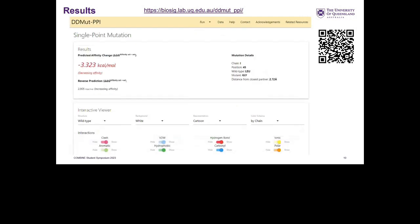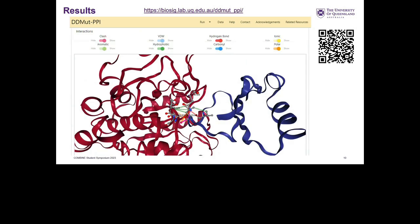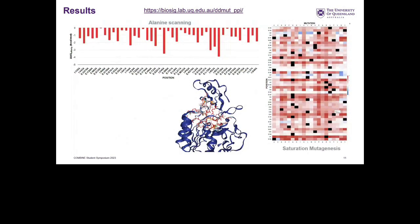The results page for a single-point mutation shows predictions for the forward and reverse mutations, and indicates whether the mutation increases or decreases affinity. In the interactive viewer, users can visualize molecular interaction patterns and rotate the structure. Users can also perform alanine scanning, where the server generates predictions for each interface residue mutated to alanine, mapped to a bar chart and the 3D structure. For saturation mutagenesis, each row represents a single interface residue and each column represents a mutant residue.